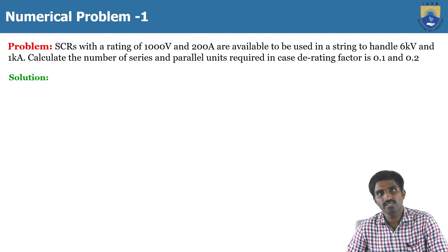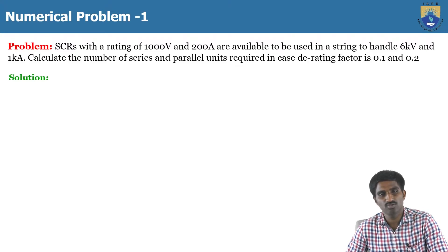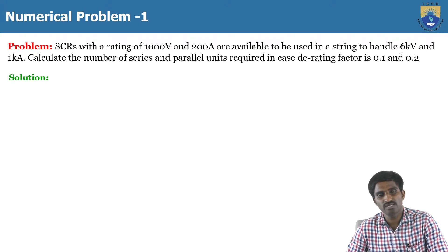We have to calculate the required number of series and parallel SCRs based on the derating factor of 0.1 and 0.2. For derating factor 0.1, how many thyristors do we need to connect in series, and how many in parallel, to handle the total string of 6 kV and 1 kA? Similarly, for derating factor 0.2, how many thyristors are needed in series and parallel?